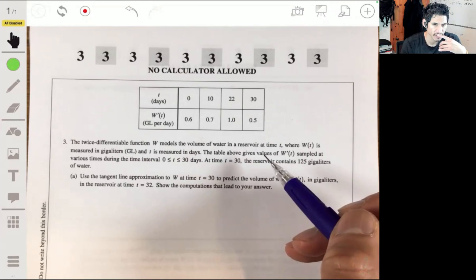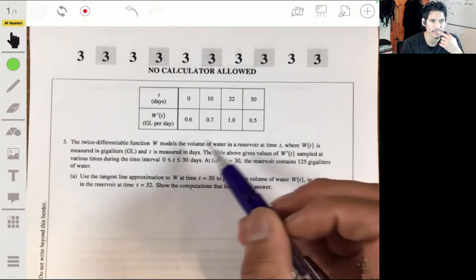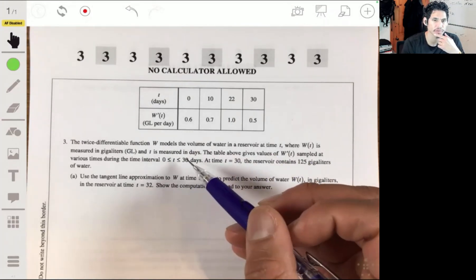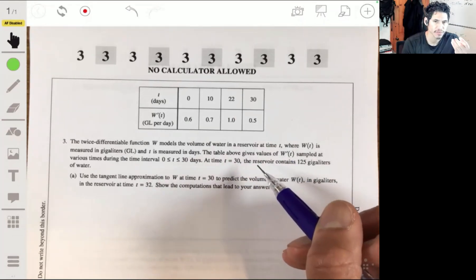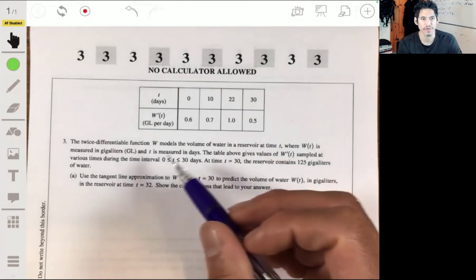The table above gives values of w prime of t sampled at various times during the time interval. So we're going from zero to 30 days, and at time t equals 30, the reservoir contains 125 gigaliters of water.